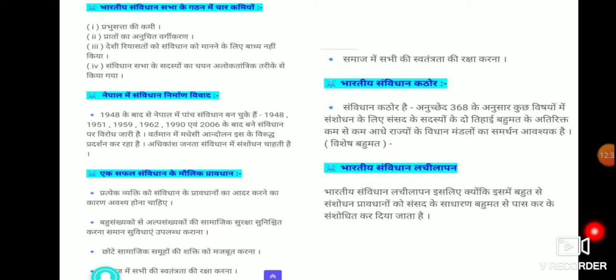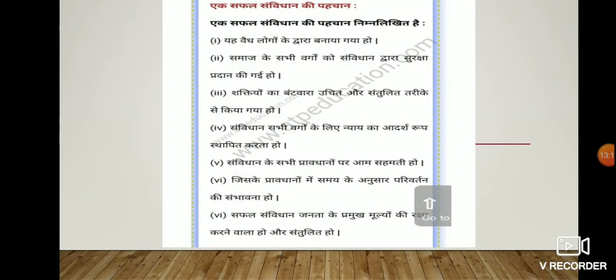The Indian Constitution is both rigid and flexible. It is rigid because, under Article 368, amendments on certain subjects require a two-thirds majority of Parliament members plus the support of at least half of the state legislatures. For other subjects, only a simple majority is needed. It is flexible because many amendment provisions can be amended by a simple majority in Parliament. The characteristics of a Samvidhan: it is made by a large group of people; all sections of society are protected; powers are distributed justly and in a balanced manner; and the Samvidhan serves the justice of all sections.